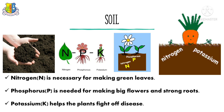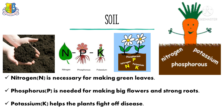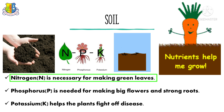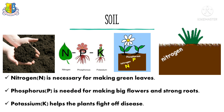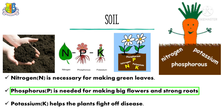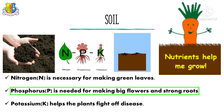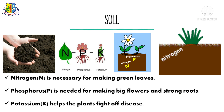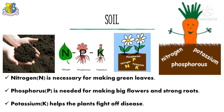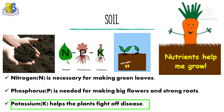Look at these pictures. Nitrogen is necessary for making green leaves. Phosphorus is needed for making big flowers and strong roots. Potassium helps the plants fight off disease.